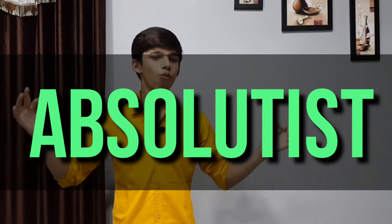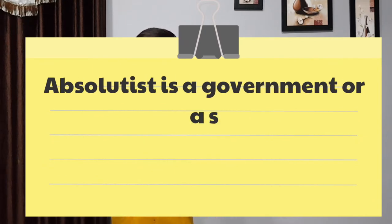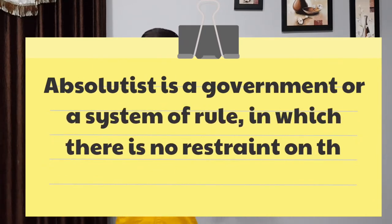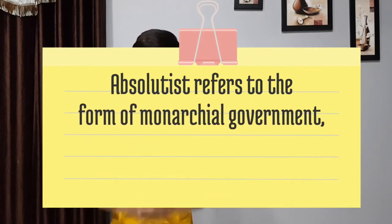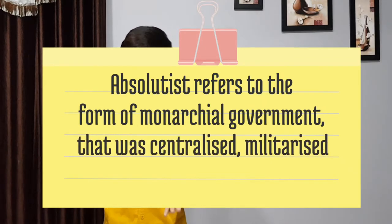I used a new term: 'absolutist.' Absolutism is a government or system of rule in which there are no restraints on power — no limit on the power of that government or system. In history, we also refer to this as monarchical government. You can relate it to Adolf Hitler. It refers to the form of monarchical government that was centralized, militarized, and repressive.